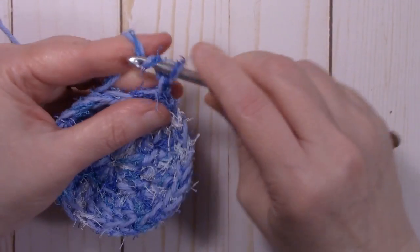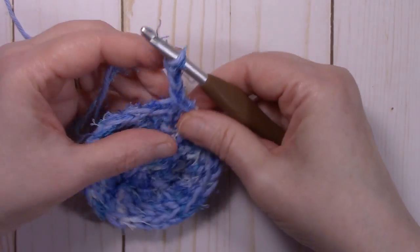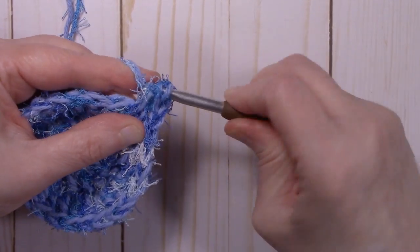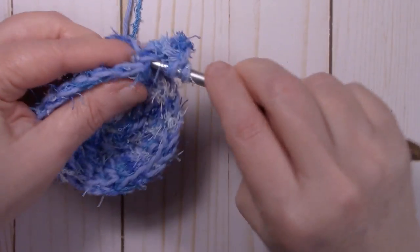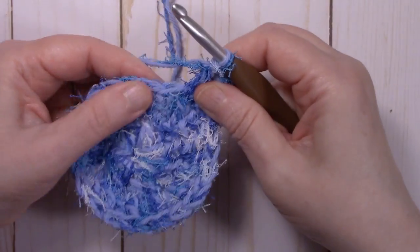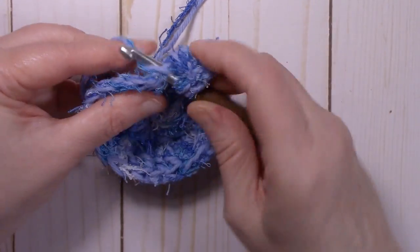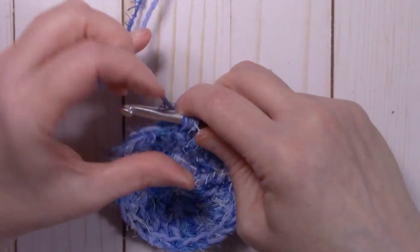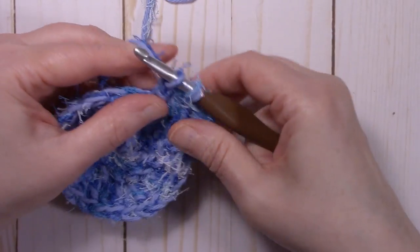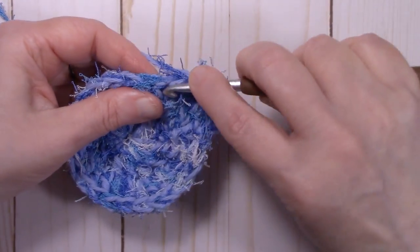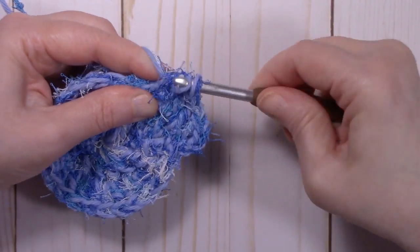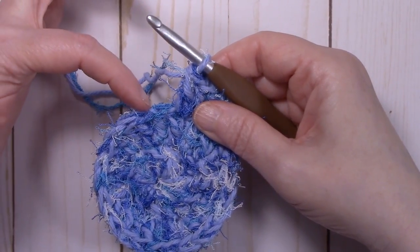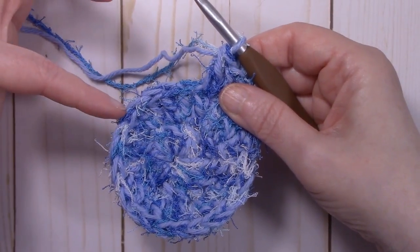So start round three. We're going to chain up three again. One, two, three. We're going to go to the next stitch, which is right here, and put two double crochets. One, two. The next stitch, we're going to put one double crochet. The next one, two double crochets. One, two. And that's going to be the repeat all the way around. One double crochet, two double crochets. One double crochet, two double crochets. One, two. One, two.